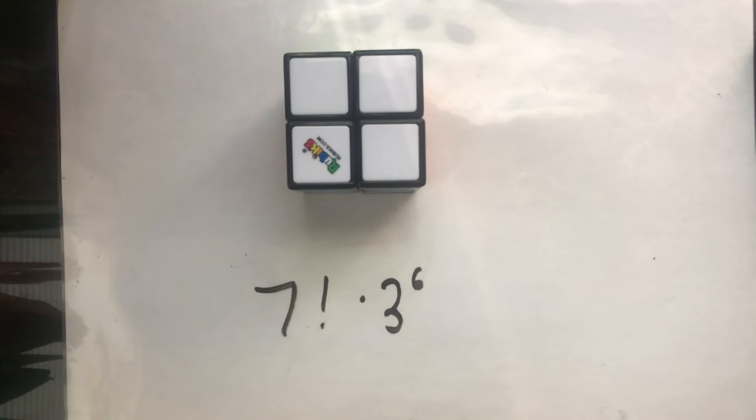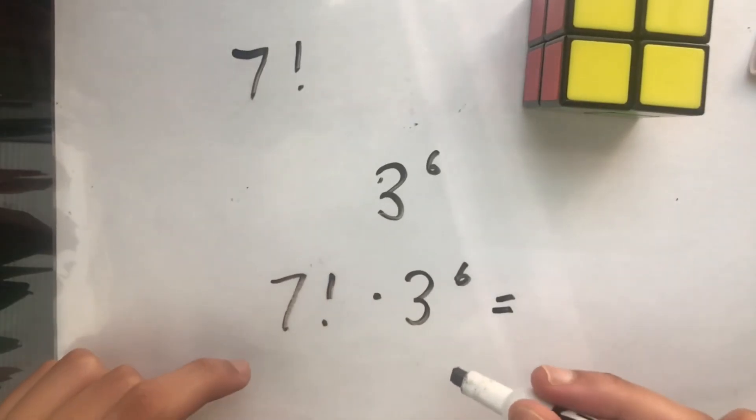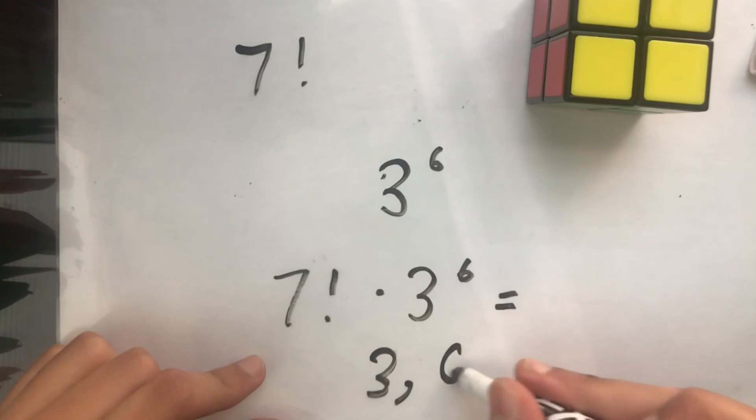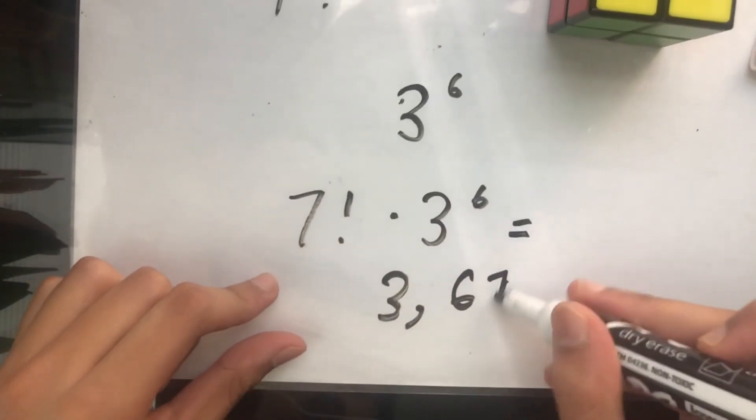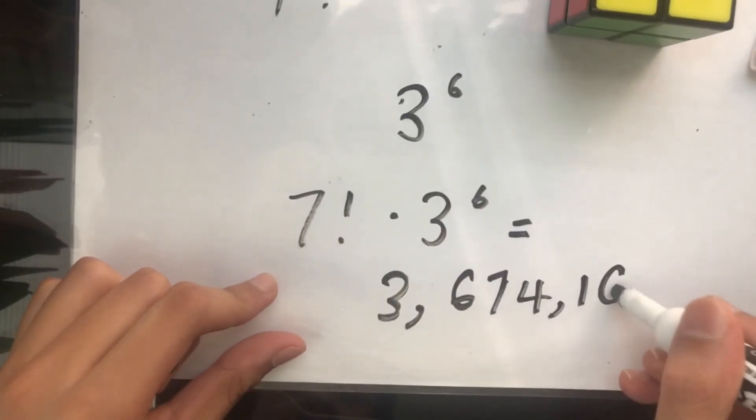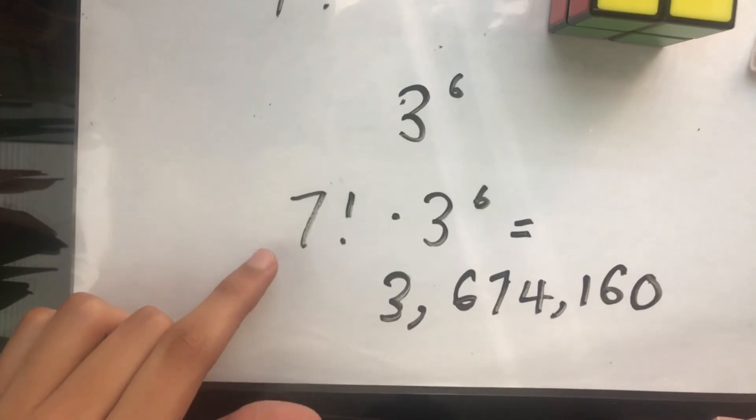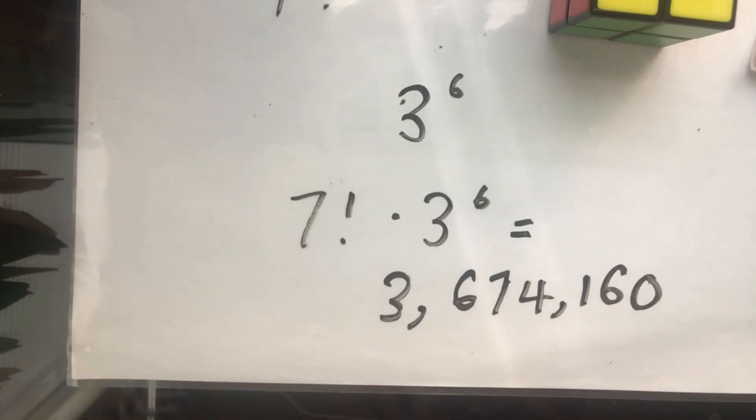So by multiplying the number of positional permutations and orientations we can arrive at our final answer. And this will be equal to 3,674,160. So that's how we get it. We have to consider the orientation and permutations of the corners. And then we can arrive at this answer.